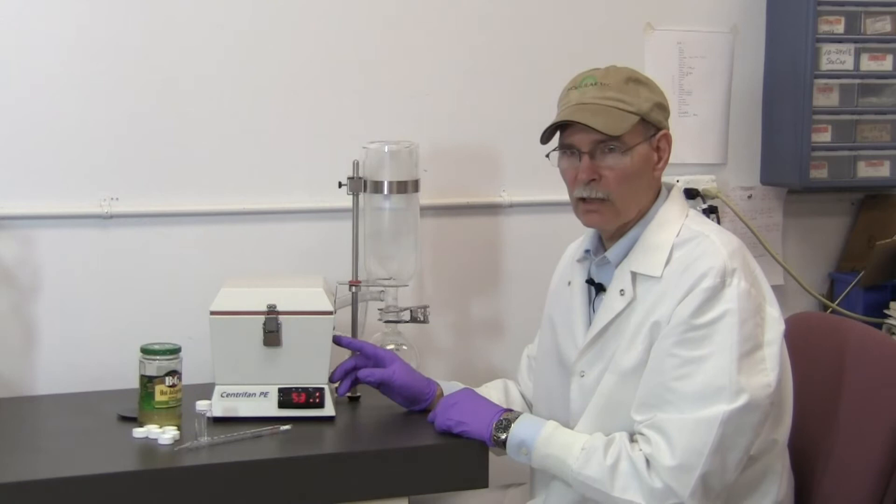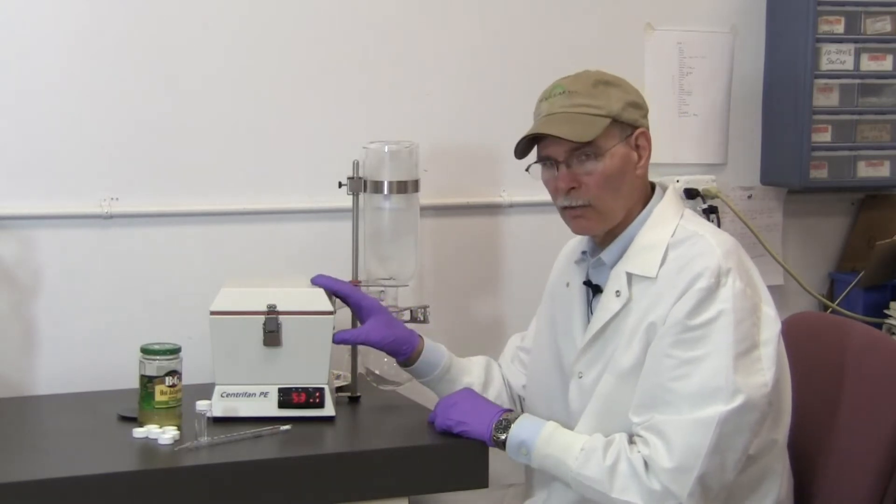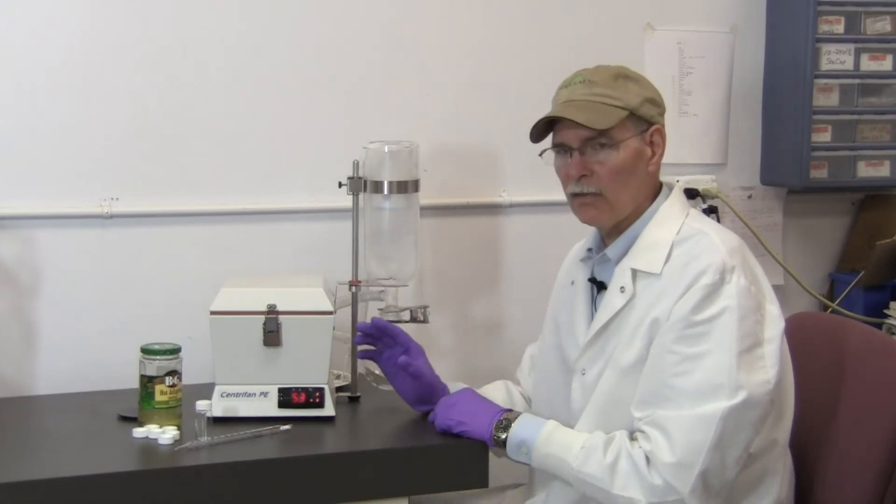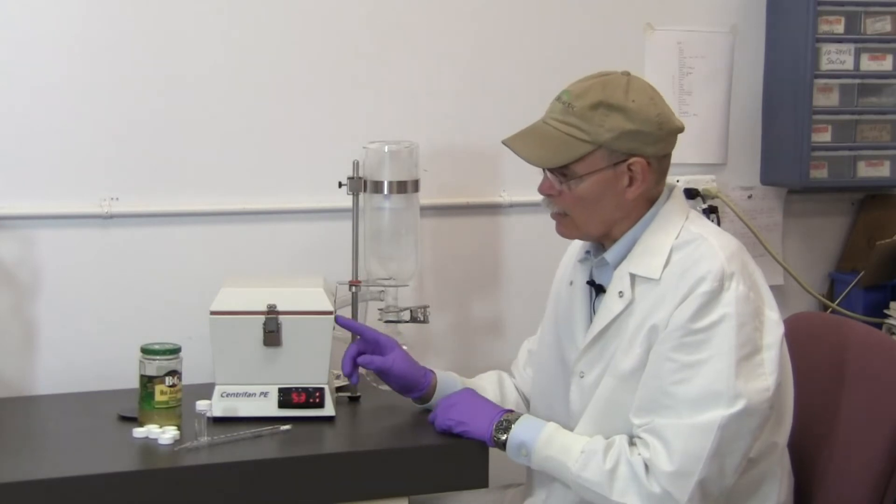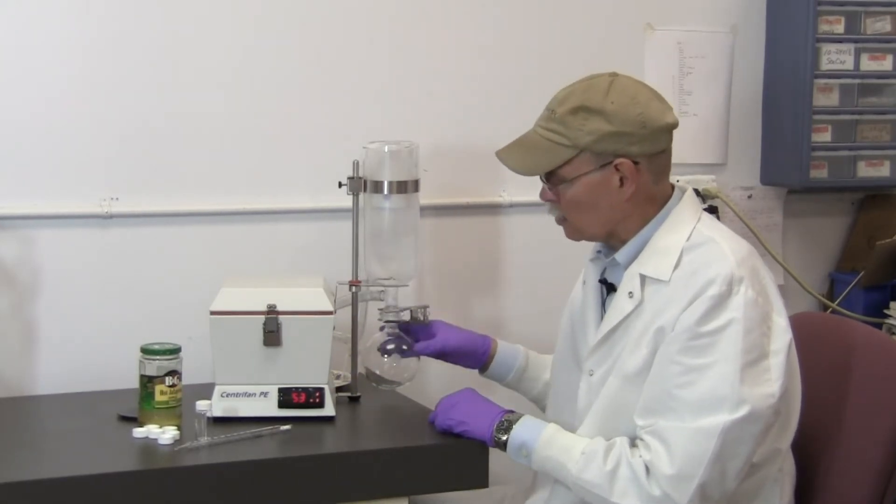Capsaicin has a molecular weight of about 305 and because of the way the Centrifan works the centrifugal force being applied to the sample containers is keeping that heavy material in the scintillation vials while the vapor is allowed to come across and condense over here in the cold trap.